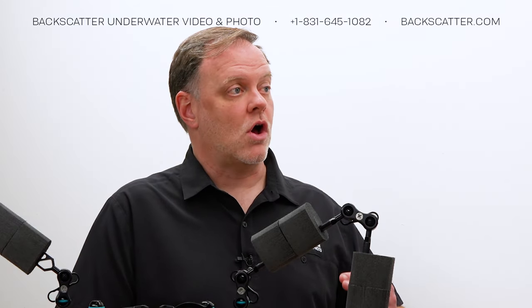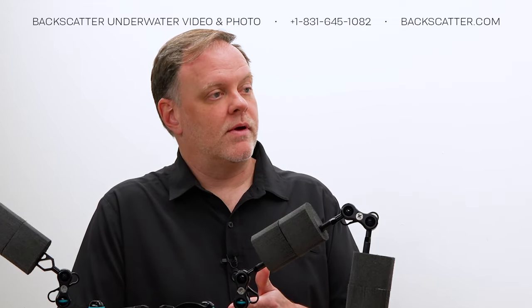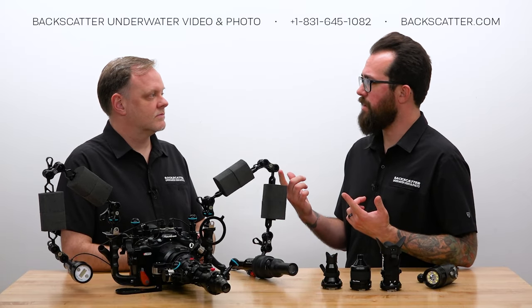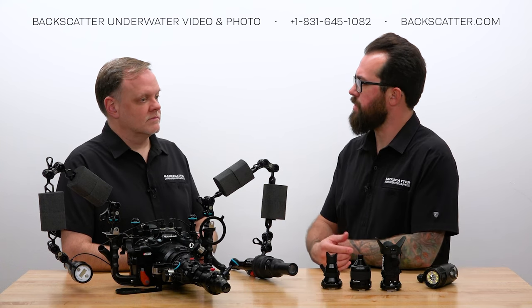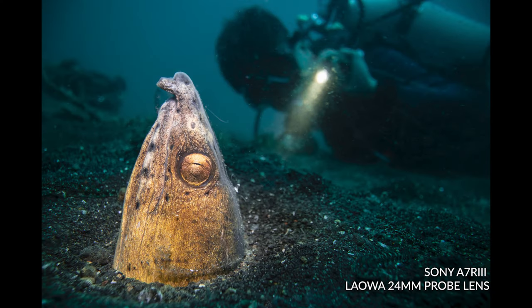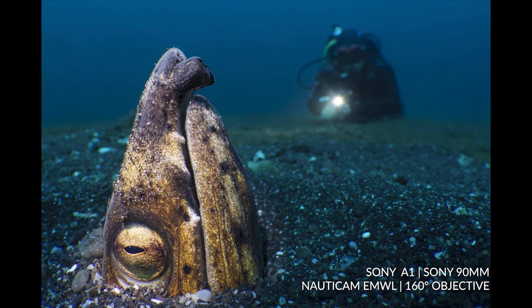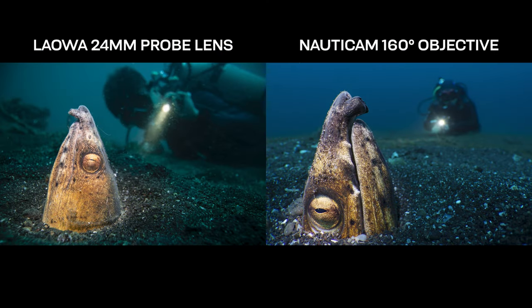That's right. The Laowa is 24mm only, whereas with the EMWL you have a choice of four different objectives that you can change underwater at will. And you actually have a couple of shots set up to do a side-by-side comparison. Yeah. So in 2019, I shot the Laowa lens in Lembeh. I had a snake eel shot with a diver in it, and the diver really struggled to get into the frame because it's not terribly wide at 24mm equivalent, which is about 80-some degrees. A flat port is going to reduce it a little bit more, so it's pretty narrow for underwater work. Whereas with the EMWL, I shot it with the 160-degree optic, and you can see how much more background you can have compared to the Laowa lens.